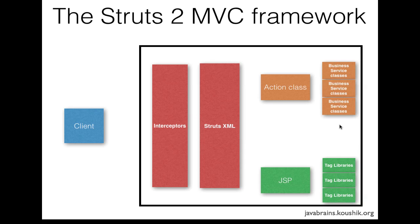Ideally, what would happen is your Struts2 action classes would be like a view layer in front of your business service layer. Say you have a business service layer that performs certain actions — the view layer, which is comprised of the Struts2 MVC layer, would be talking to the business service to get the actual work done. But in this application, we are not going to have any business service classes. The action class will just print a hard-coded message to start, and then we'll see how to integrate with business service methods later on.